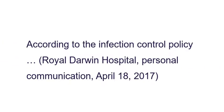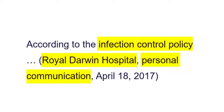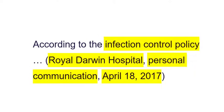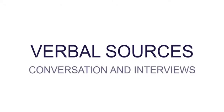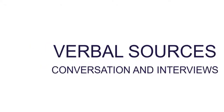In your text you can refer to the kind of document it is, and in the citation include the author's name — in this case it's an organisation — followed by the words 'personal communication' and the date you accessed the document. The same applies for verbal sources such as conversations and interviews.